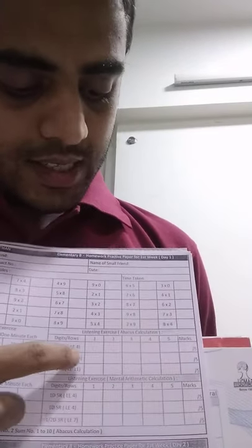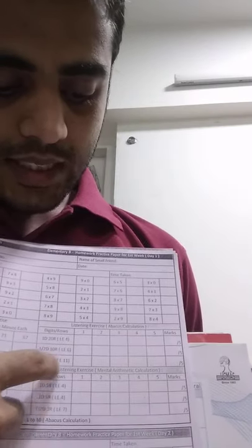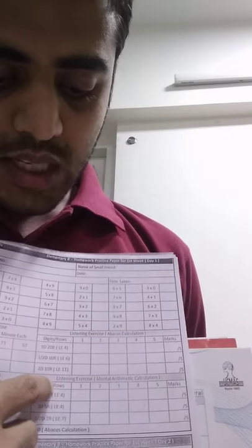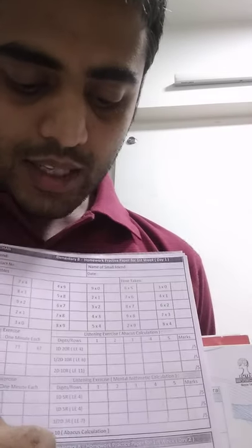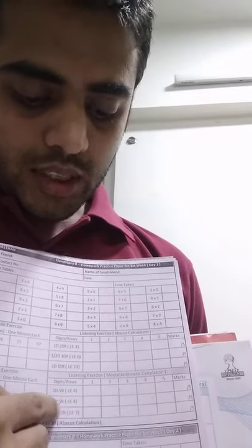The most important thing is that we have to understand this particular coding which says that le 4, le 6 - that means listening exercise book page number 4, listening exercise book page number 6. One digit 10 rows, one digit 20 rows, two digit 10 rows is on listening exercise book page number 11. Then we have to move to mental arithmetic calculation where you have one digit 5 rows from page number 4, and then 1 to 2 digit mix, 3 rows le 7. You can use this listening exercise book, or else you have your level 2 books - after page number 30 there are many questions with 2 digits.